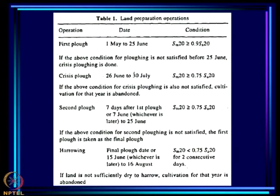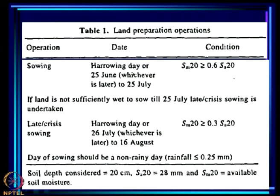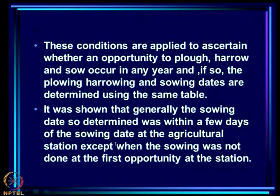Given the rainfall pattern of any year, say 1965, we can determine when the first plough, second plough, harrowing, and sowing would have occurred. This is determined by a table based on the criteria that farmers use, expressed in terms of soil moisture at a top layer depth of 20 centimeters. Accordingly, harrowing, ploughing, and sowing take place depending on the criteria.